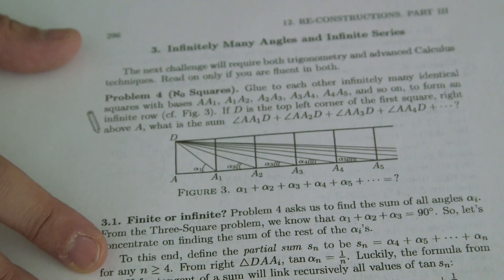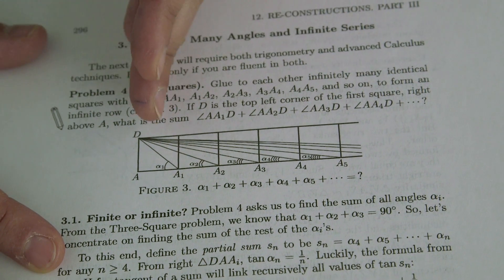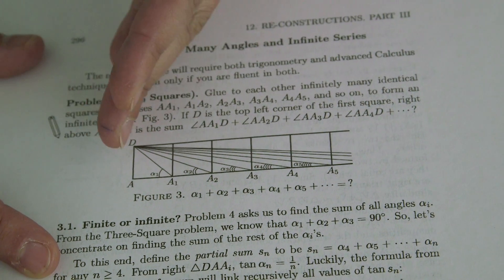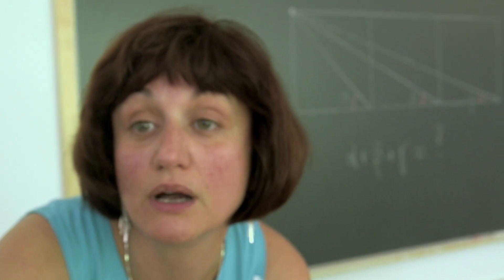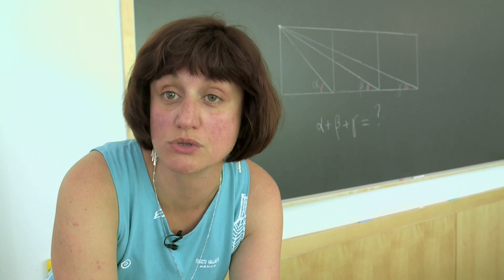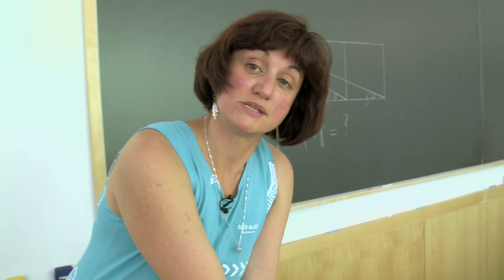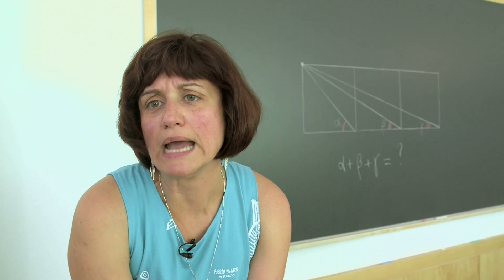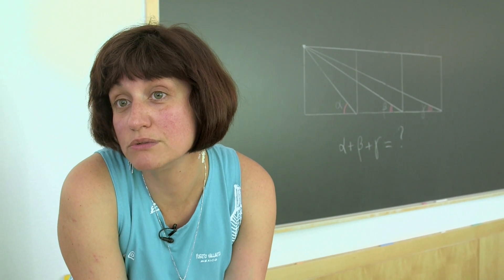So the question is, why only three squares? Why don't you put four, five, or perhaps even infinitely many next to each other and ask exactly the same question? What is the sum of the angles alpha 1 plus alpha 2 plus alpha 3 plus alpha 4, and so on and so forth? Would you be able to do a similar solution, a purely geometric one? Do you really need calculus and inverse trigonometry and perhaps series to solve this problem?